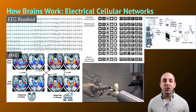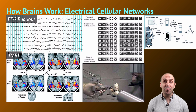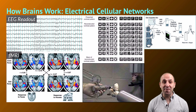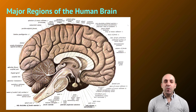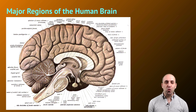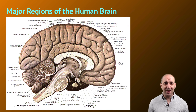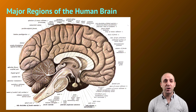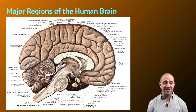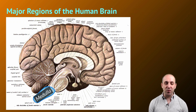All of this together demonstrates that brains work through the generation of electrical signals in the neurons that make them up. That may sound relatively simple, but it's the patterns of these electrical signals that lead to the complexity of responses we see in animals that have brains. Now that we have some understanding of how brains work, let's talk about major regions of the human brain — we'll look at big regions here, not the individual folds, starting at the bottom with the medulla.